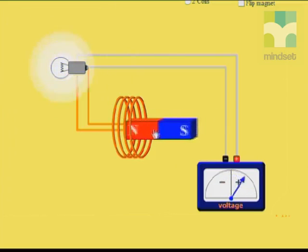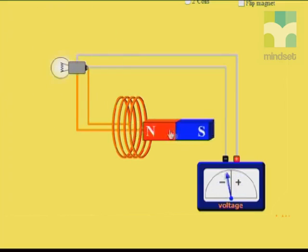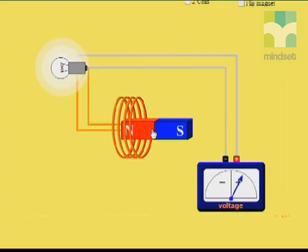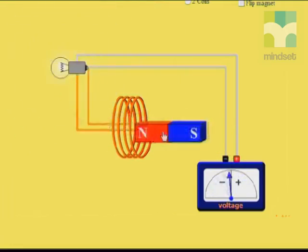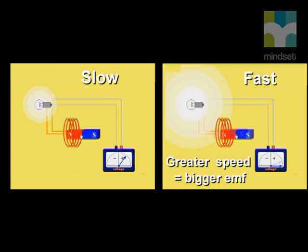We start by moving the magnet slowly in and out of the solenoid. The bulb glows, but not very brightly. Now we will use the same magnet but move it very fast. The light bulb burns brightly. The light bulb shines brightly when the speed of the motion is fast. We can conclude that the greater the speed with which the magnet is moved, the bigger the induced current or EMF.